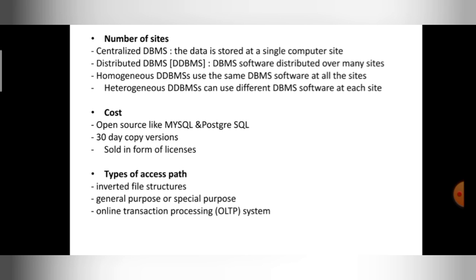Next, based on the types of access path, I can divide DBMS — for example, using inverted file structures. Based on the access path, I can classify DBMS into general purpose, special purpose, or online transaction processing (OLTP) systems. General purpose means it cannot be customized. Special purpose means it can be customized according to your needs. OLTP systems include examples such as e-commerce related databases.